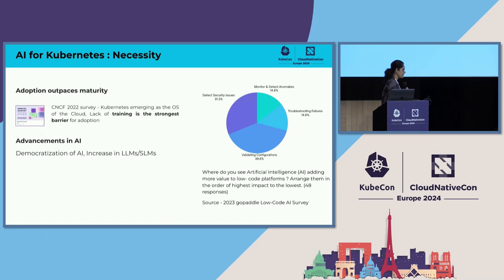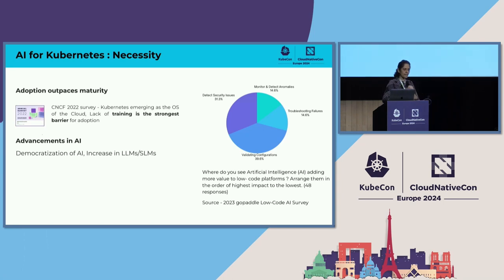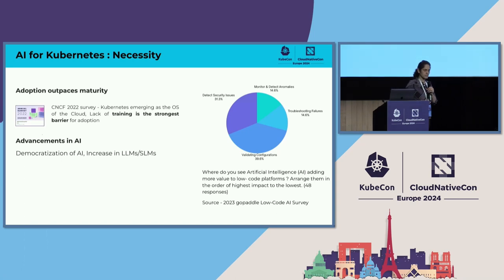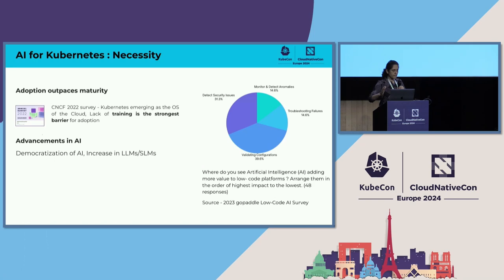Let's dive in. AI for Kubernetes — what's the necessity and how can AI help? This is a slightly outdated survey conducted by CNCF in 2022, but the problem still remains. Training is one of the strongest inhibitors for Kubernetes adoption. And even if we are on Kubernetes, troubleshooting and maintaining is really complex. Upskilling is difficult. But at the same time, we are seeing a huge explosion of AI solutions, and we are readily able to see the value that it brings to the table.